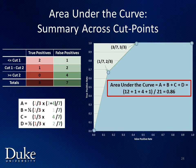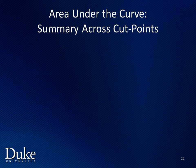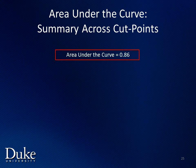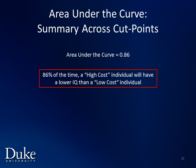Now that we've calculated the area of the two rectangles and two triangles, finding the overall area under the curve is just a matter of adding them all together. When we do this for this simple example, we get the area under the curve equal to 0.86. So, we've shown that in our example the area under the curve is 0.86. It means that if we take one random low cost individual and one random high cost individual, 86% of the time the high cost individual will have a lower IQ than the low cost individual.